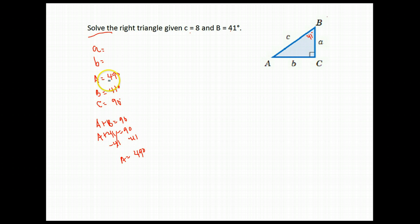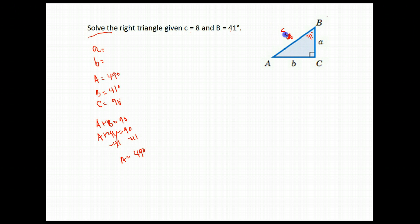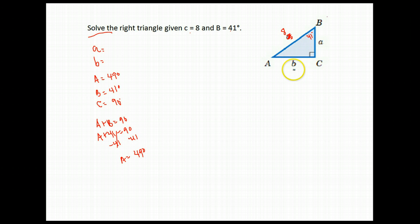So far I have my three angles: A, B, and C. The other thing I need to find is these two sides. We can't use the Pythagorean theorem yet because all we know is the hypotenuse — we don't know either leg, and to use the Pythagorean theorem, you need to know at least one of them. So instead, we're going to use a trig ratio to find one of these two sides, and then we can use the Pythagorean theorem to finish up.